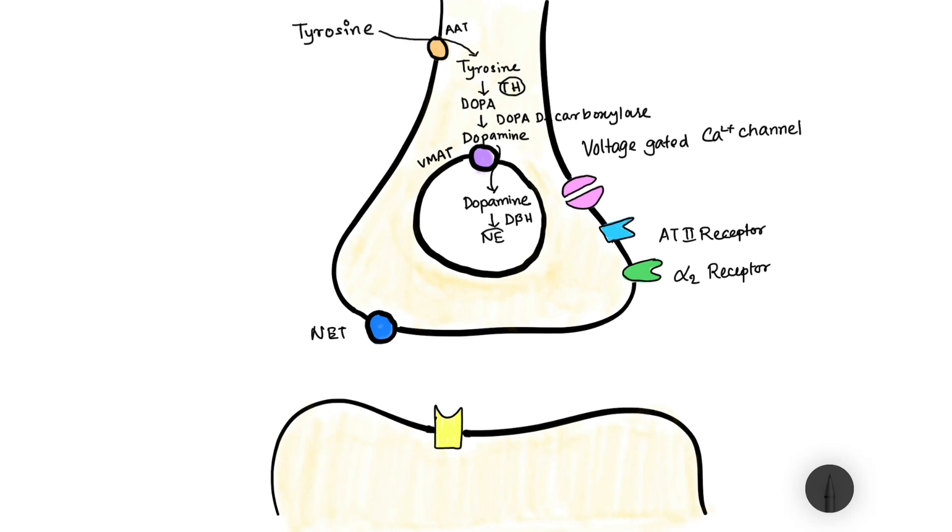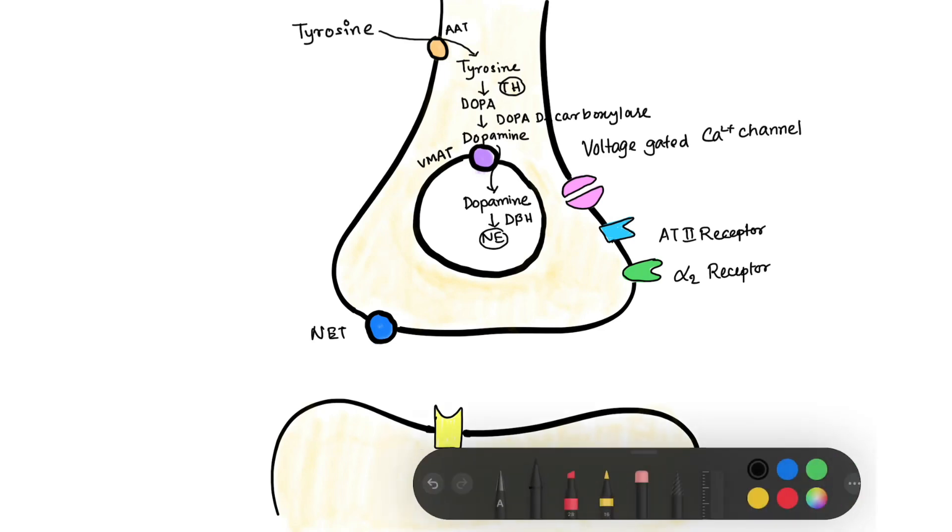Now this norepinephrine thus formed is stored within the presynaptic vesicle. There are certain influencers which influence the release of this norepinephrine from the presynaptic vesicle into the synaptic cleft.